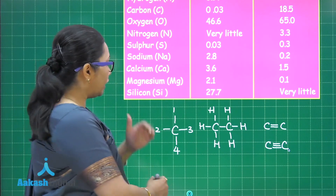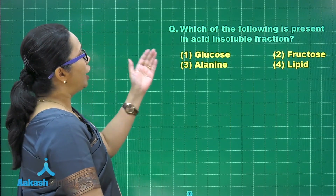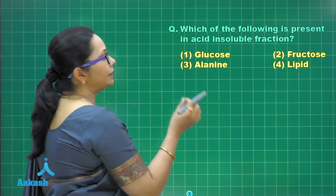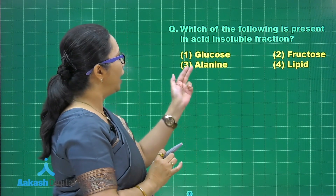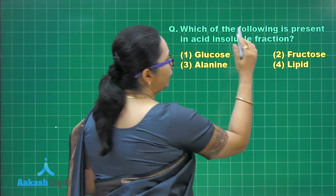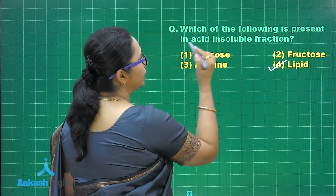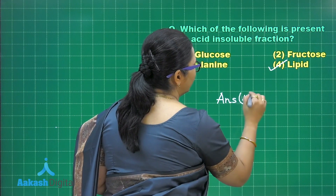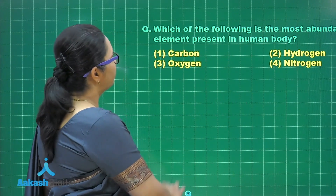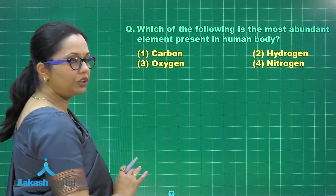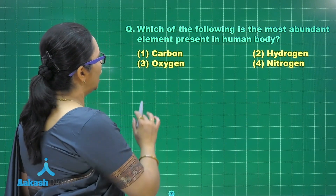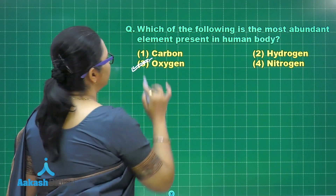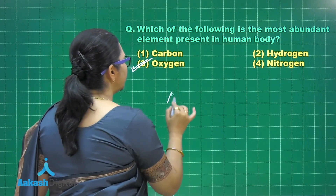Let's apply this information in some questions. First: which of the following is present in the acid insoluble fraction? Glucose is a simple sugar, fructose is a simple sugar, alanine is an amino acid, and lipid is an exception that is found in the acid insoluble fraction even though it is not a macromolecule. So the answer is option four. Second question: which of the following is the most abundant element in the human body? Out of the big four — carbon, hydrogen, oxygen, and nitrogen — the most abundant at 65.5% is oxygen. The answer is option three.